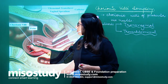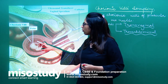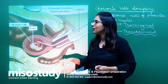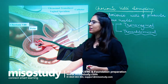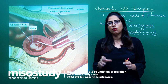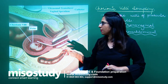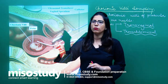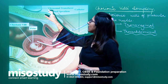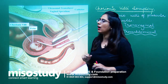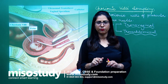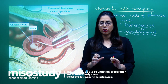Once the needle reaches the chorionic villi region of the placenta, the cells from there are taken out. A local anesthesia is applied over the stomach region and everything is done under the ultrasound transducer.